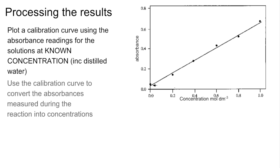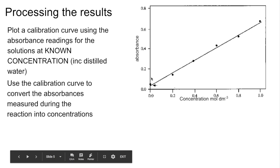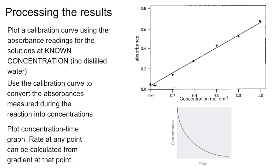Once you've got the calibration curve, you can use it to convert those absorbances that you measured at those regular time intervals into concentrations. You've got, let's say, an absorbance there—you can read along and get the concentration that way. Then obviously what you can do from that is plot the concentration-time graph and calculate the rate at any point by drawing a tangent at that point and calculating the gradient.